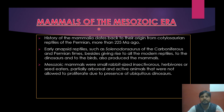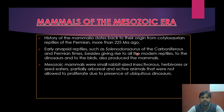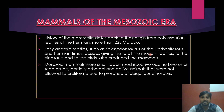The history of mammals dates back to their origin from synapsid reptiles of the Permian period, more than 220 million years ago. Early synapsids such as Solenodonsaurus of the Carboniferous and Permian type, besides giving rise to modern reptiles, dinosaurs, and birds, also produced the mammals.